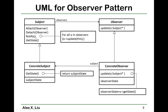For notify, you iterate over all the observers in the vector and call their update function. The parameter you pass is 'this' — basically the pointer to the concrete subject. The subject also has a pure virtual function called getState, which gets the information from the subject states stored in the concrete subjects.